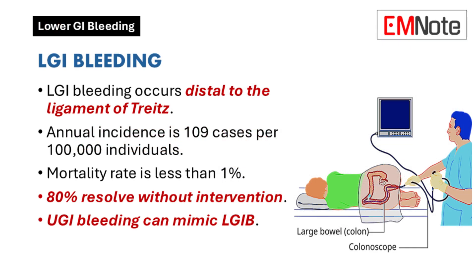Lower gastrointestinal bleeding refers to the loss of blood from the gastrointestinal tract distal to the ligament of Treitz. It has an annual incidence of approximately 109 cases per 100,000 individuals and a mortality rate of less than 1%. This condition occurs more frequently than upper gastrointestinal bleeding, and approximately 80% of episodes resolve without medical intervention.